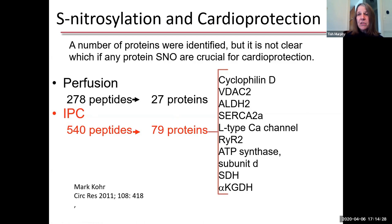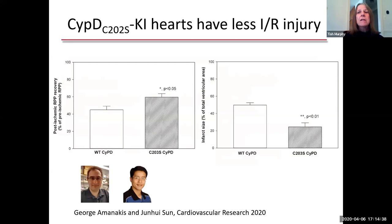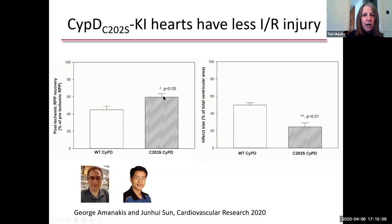From our proteomic methods, we knew it was cysteine 202 in humans (203 in mice) that was S-nitrosylated. So we used CRISPR-Cas9 to make a mouse where we mutated this cysteine to a serine in all cells of the body. When Junui Sun and George Aminakis studied this mouse, they found that mutating cysteine 202 to a serine was cardioprotective. In a Langendorff-perfused heart with 20 minutes of ischemia and 60 minutes of reperfusion, they had better recovery of function and smaller infarcts.